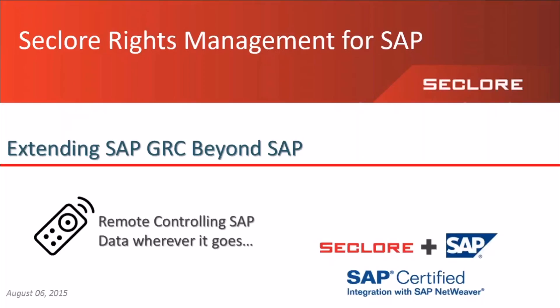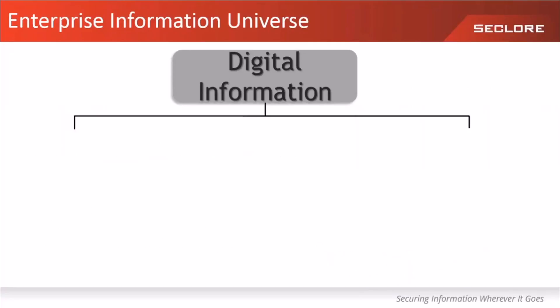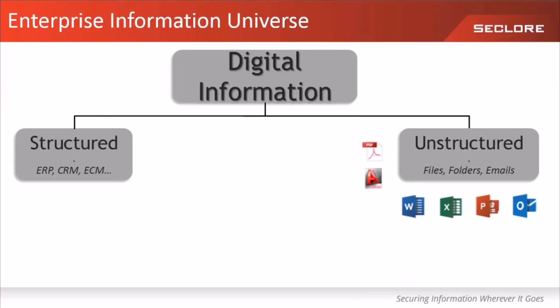Let's begin by understanding what we mean when we say Secular Rights Management for SAP. In any enterprise information universe there typically exist two types of information at the highest level. One is structured, which is what sits in applications and databases — your ERP like SAP, a CRM system or any other transaction system — which is usually backed up with a database at the back end where data is stored in rows and columns. The other kind of information is unstructured or file-based information, and we often find a lot of this in most enterprises.